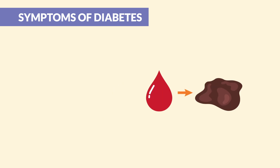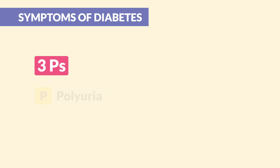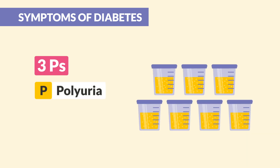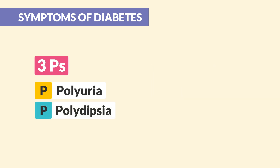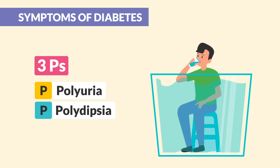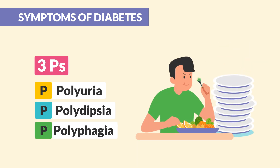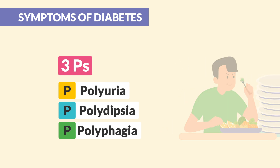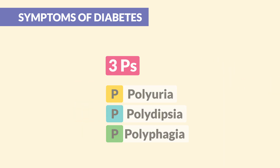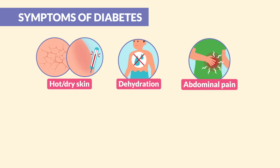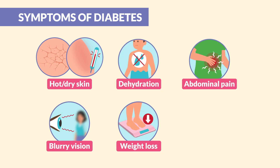When the blood is turned to mud, the body tries to get rid of all this thick, sugary blood with the three P's. First is polyuria — too much urine as the body tries to urinate all this blood sugar out into the potty. The next P is polydipsia — think you're going for a dip inside a swimming pool — this means drinking too much fluid as the body tries to dilute all that sugar in the blood. The last one is polyphagia — too much eating from excessive hunger as the cells starve from the lack of glucose. Besides the three P's, other symptoms of high blood sugar include hot and dry skin, dehydration, abdominal pain, blurred vision, weight loss, and recurring infections.